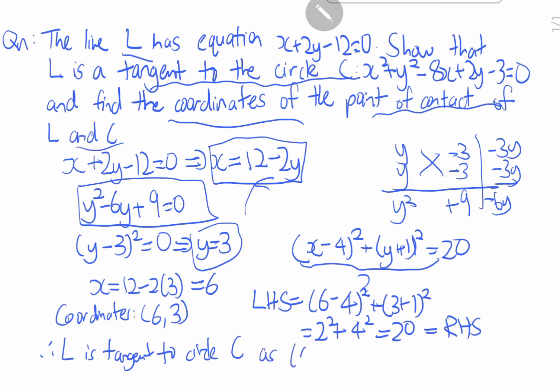Therefore the point (6, 3) lies on the circle. We have already proved this — we have shown that L is a tangent and that the point (6, 3) lies on the circle, and we have already found the point of contact.